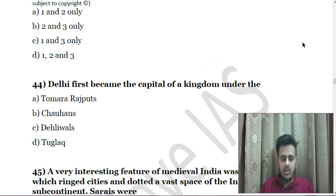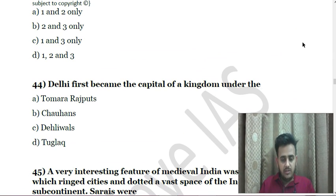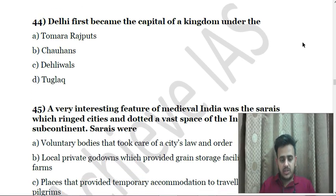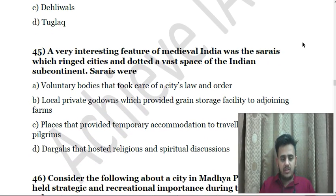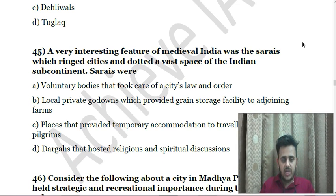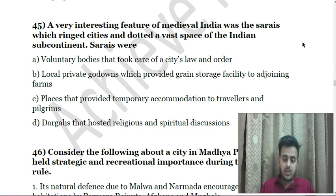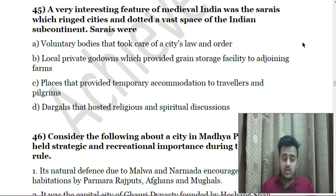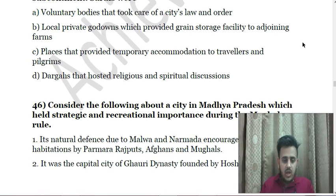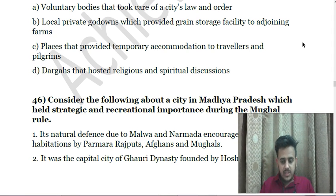Next: Delhi first became the capital of a kingdom under — A. Ananga Pal, B. Rajput's beach of Hans, C. Dilawar's Deed, D. Tughlaq. Next: A very interesting feature of medieval India was the Sarais, which ringed cities and dotted a vast space of the Indian subcontinent. Sarais were — A. Voluntary bodies that took care of a city's land with local private gardens providing drain storage to adjoining farms; B. Places that provided temporary accommodation to travelers and pilgrims; C. Gatherings that hosted religious and spiritual discussions.